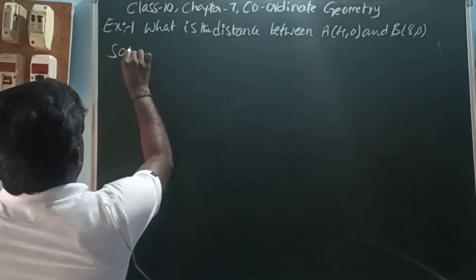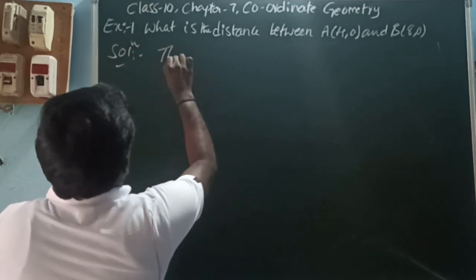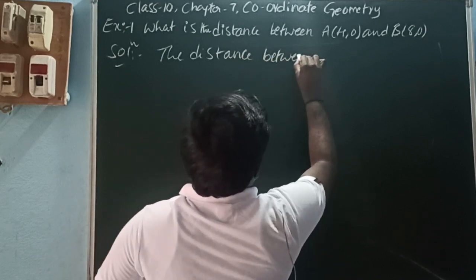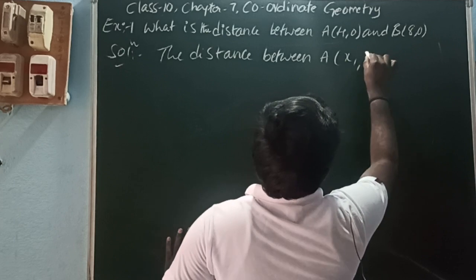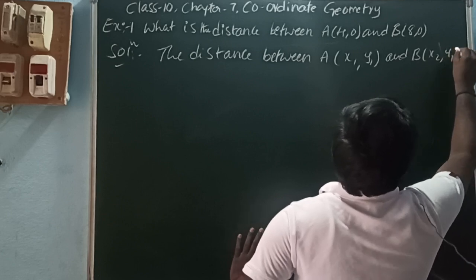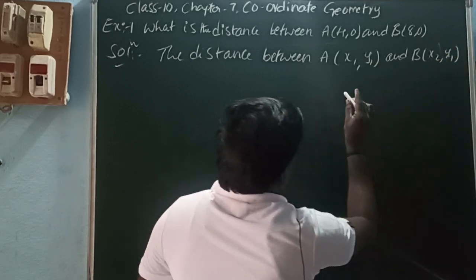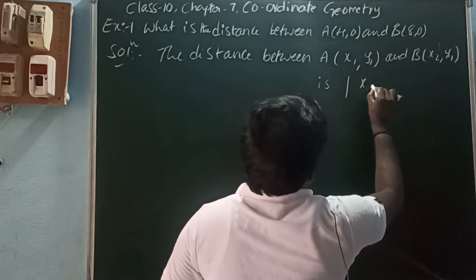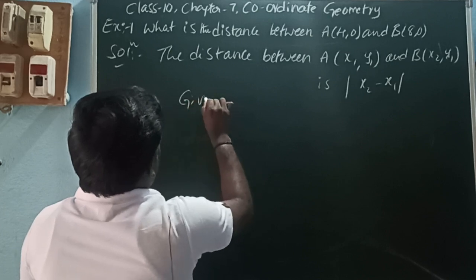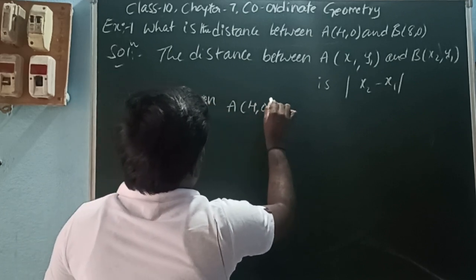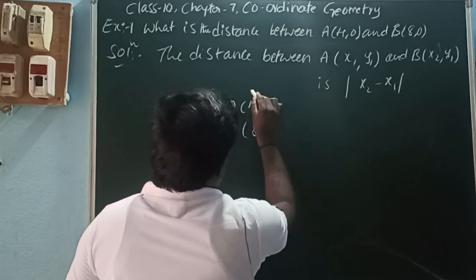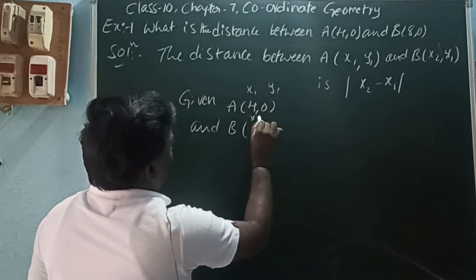The distance between A(x1, y1) and B(x2, y1) — where the y-coordinate is the same — the formula is modulus of x2 minus x1. Given A(4, 0) and B(8, 0), here x1 = 4, y1 = 0 and x2 = 8, y2 = 0.